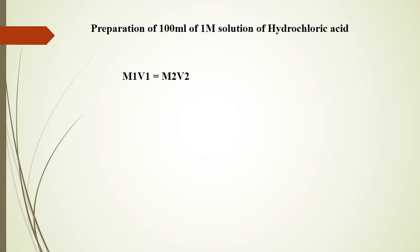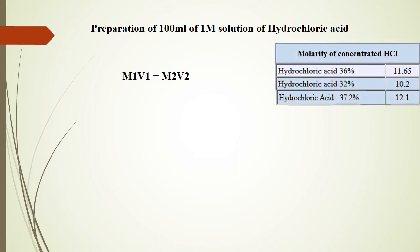Let's do the calculation for preparation of 100 ml of 1 molar solution of hydrochloric acid. M1 is equal to 12.1, which is taken from literature. As you can see in the table, different molarities of hydrochloric acid are listed according to different percentages. You should choose the molarity that supports the percentage of acid you will use in the experiment. I choose 12.1 molarity according to the available strength of the hydrochloric acid.